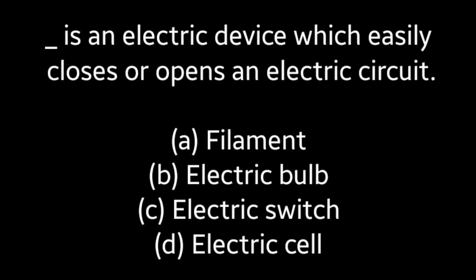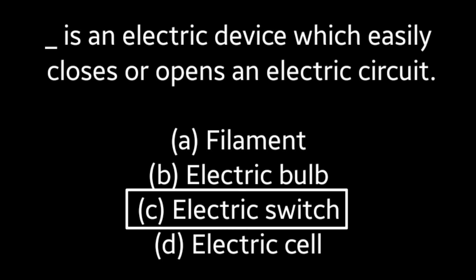Next question: Blank is an electric device which easily closes or opens an electric circuit. (A) Filament, (B) Electric bulb, (C) Electric switch, (D) Electric cell. Answer is Option C: electric switch.